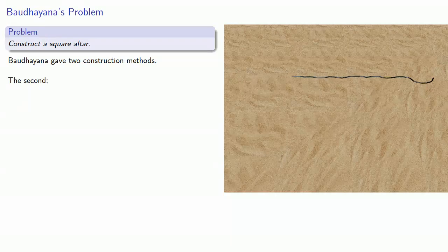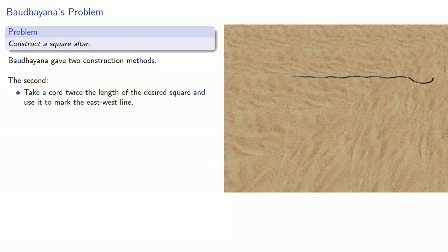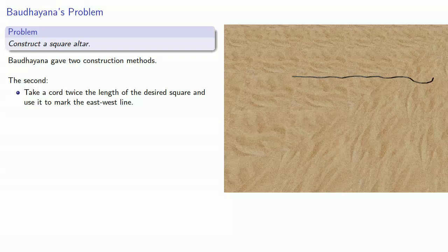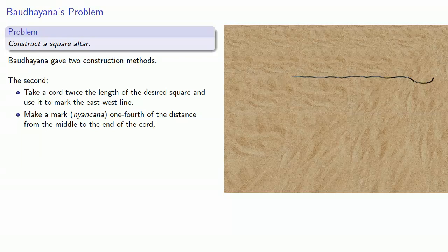Baudhāyana's procedure was the following. First, take a chord twice the length of the desired square and use it to mark the east-west line. Now, make a mark, a nyankana, one-fourth of the distance from the middle to the end of the chord.